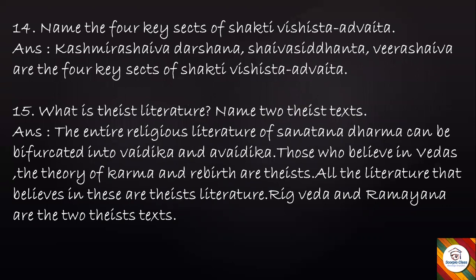Question: Name the four key sects of Shakti Vishishtha Advaita. Answer: Kashmira Shaiva Darsana, Shaiva Siddhanta, and Veera Shaiva are among the key sects of Shakti Vishishtha Advaita.